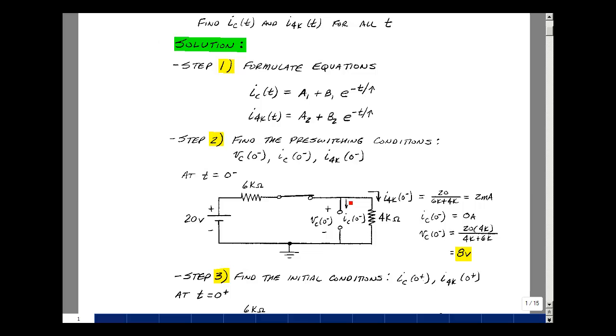The current in the capacitor is going to be 0 because it's an open circuit. The current in this 4k resistor is simply going to be the fact that there's 20 volts and 10k in this path, and so the current would be 2 milliamps. And lastly, the capacitor voltage is also the voltage across the 4k, and I could use voltage divider to find the voltage across the 4k.